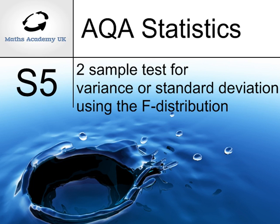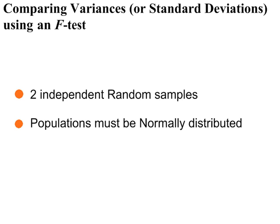A two-sample test for the population variance or standard deviation using the F distribution. We need two independent random samples, and the samples must come from populations which are normally distributed. If a test is given for a standard deviation, the values must be squared to get variances, as we only test for variances.